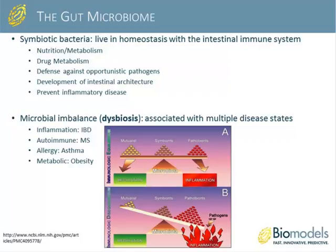The bacteria within the gut fall into three categories. Commensals and mutualists are permanent residents that provide no clear benefit or detriment to the host. The second group, symbionts, live in homeostasis within the intestinal immune system and are considered health-promoting bacteria with effects on nutrition, metabolism, drug metabolism, defense against opportunistic pathogens, development of intestinal architecture, and prevention of inflammatory diseases. The third class, pathobionts, are permanent residents of the microbiota with the potential to induce pathology.